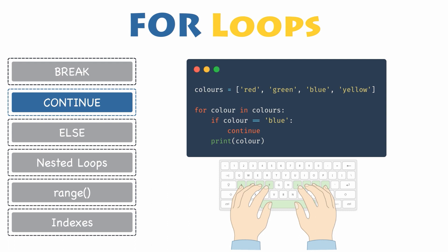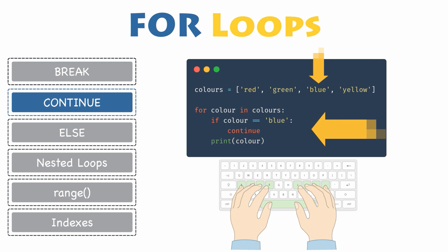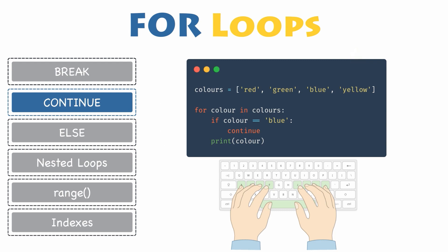Continue is also a control statement, but the only difference is that it will only skip the current iteration in the loop, continues with the next iteration, then executes the rest of the iterations anyway until it reaches the last item of the sequence. In the above example, as soon as the loop encounters the item blue, it will enter the if statement block where the continue statement will skip the current item in the loop, then continues to the next iteration with the item yellow. This will result in printing out red, green, and yellow, since blue has been skipped over.